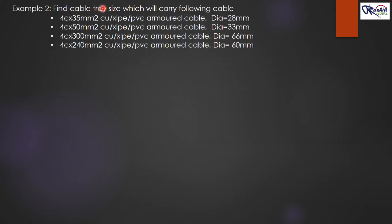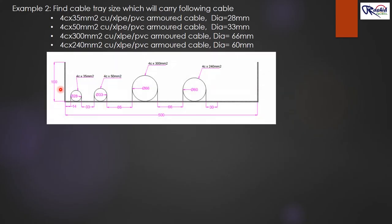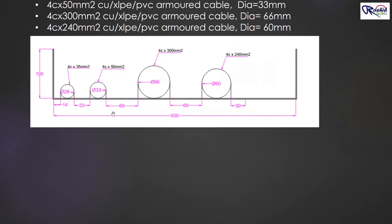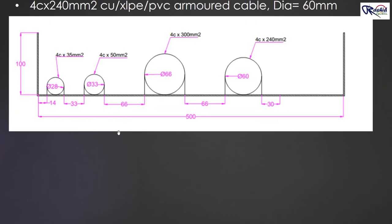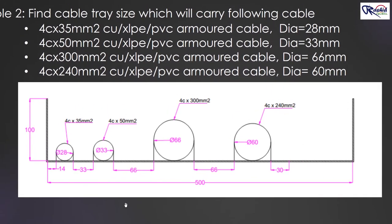Let's see one more example. Find the cable tray size which will carry the following cables: 4-core 35 mm² armored cable with diameter 28 mm; 4-core 50 mm² with diameter 33 mm; 4-core 300 mm² with diameter 66 mm; and 4-core 240 mm² with diameter 60 mm. All cables are armored type. You can see the arrangement following the same rules, with all cable diameters labeled in the layout.